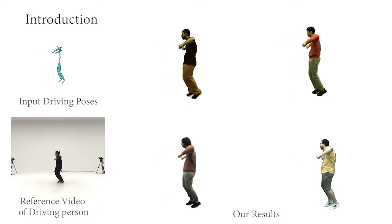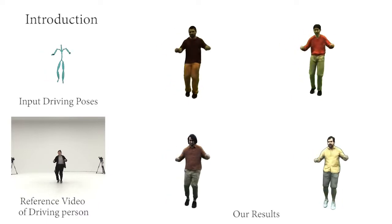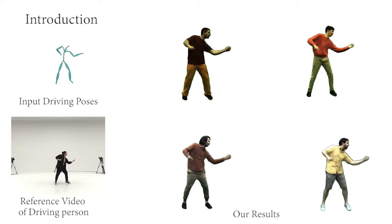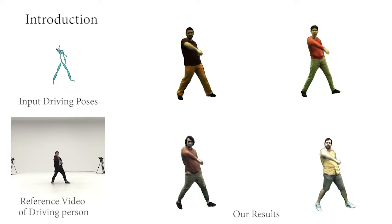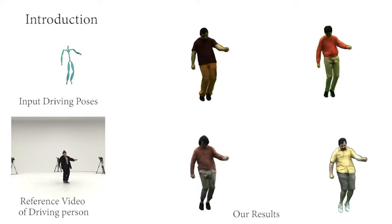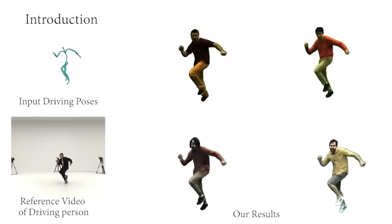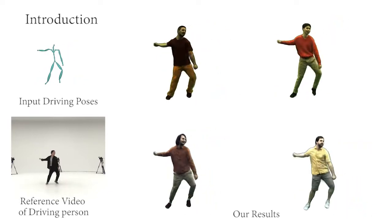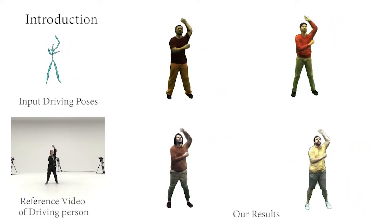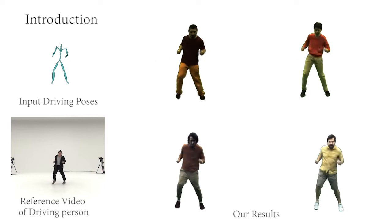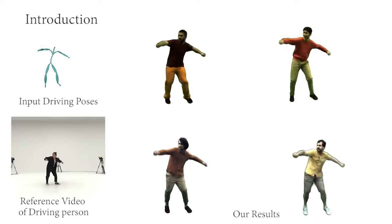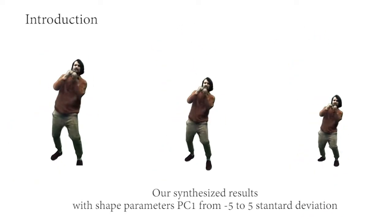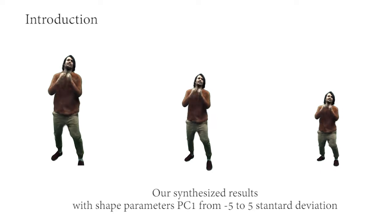Since our method only requires a skeletal pose, we can apply the same pose to different people, allowing effects like synchronous crowd dancing. We can also control the body shape of the synthesized human actors.